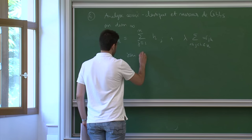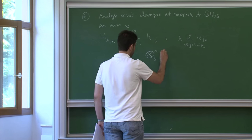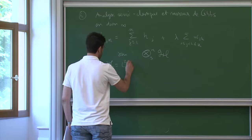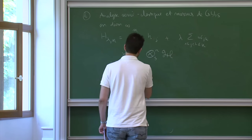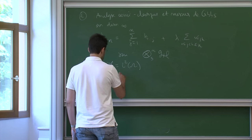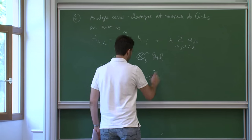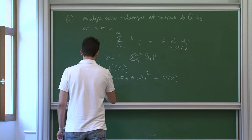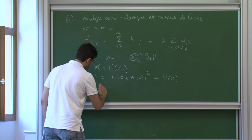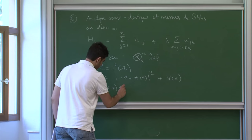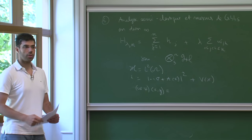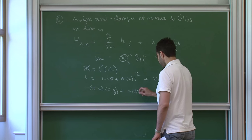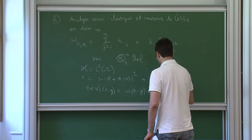On est sur le produit tensoriel symétrique N-ième d'un espace de Hilbert H. La situation concrète qui nous intéresse, c'est H = L² d'un ouvert Ω, un ouvert borné typiquement. H c'est moins i gradient plus un potentiel vecteur magnétique plus V(x). Et W, c'est un opérateur qui agit sur l'ensemble des fonctions à deux variables, généralement une multiplication par une fonction de la forme W(x−y).